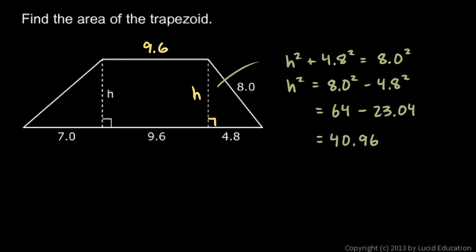So h then is the square root of 40.96, and that works out reasonably well to 6.4. So that's my height, 6.4. Let's write that in. Okay, that's the height here or here.